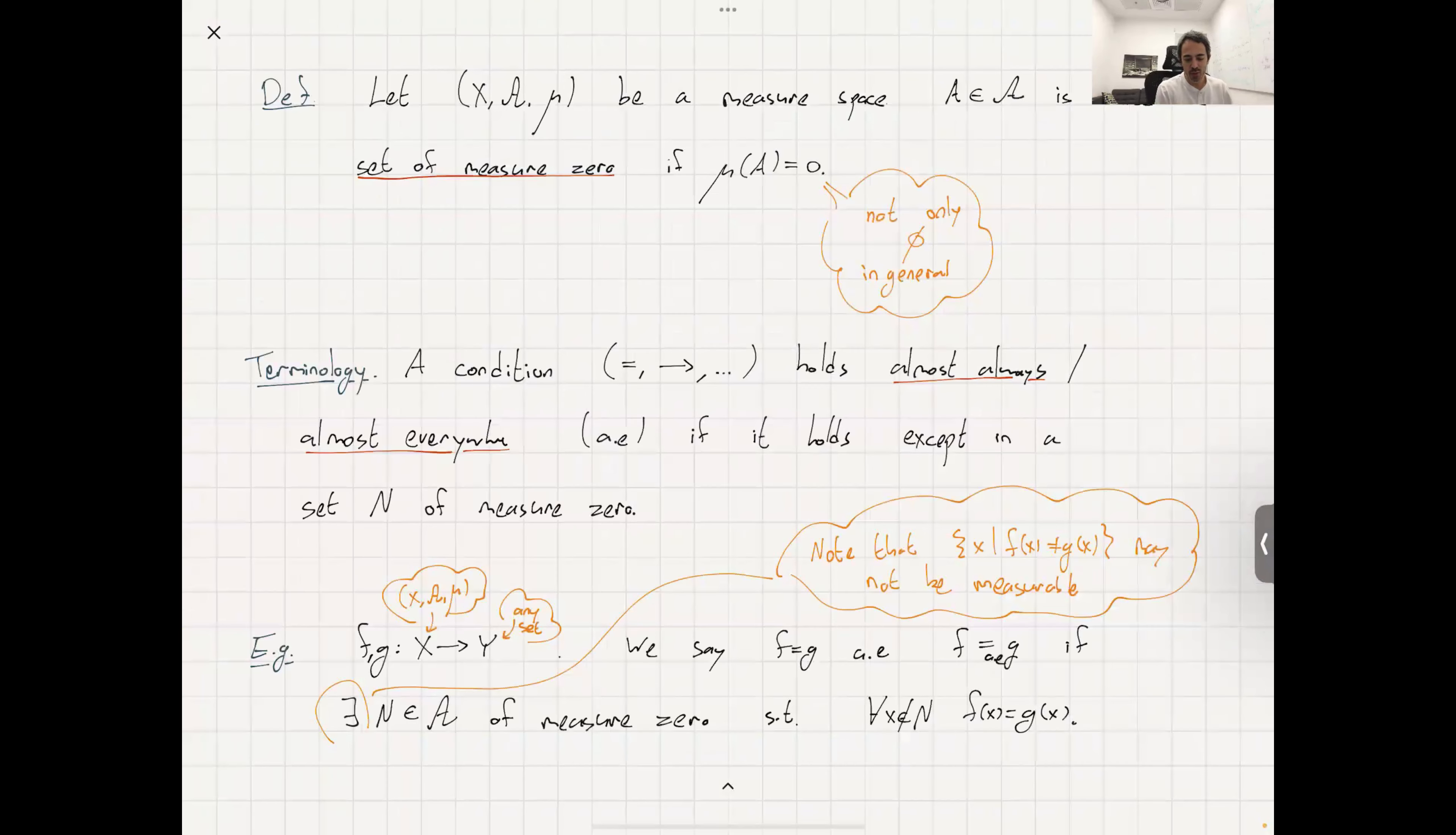So say you have a measure space - a measurable space and a measure on it. A set A, a measurable set, namely an element in the sigma algebra, is called a set of measure zero if its measure is zero. The point to notice here is that there could be sets other than the empty set which have measure zero.